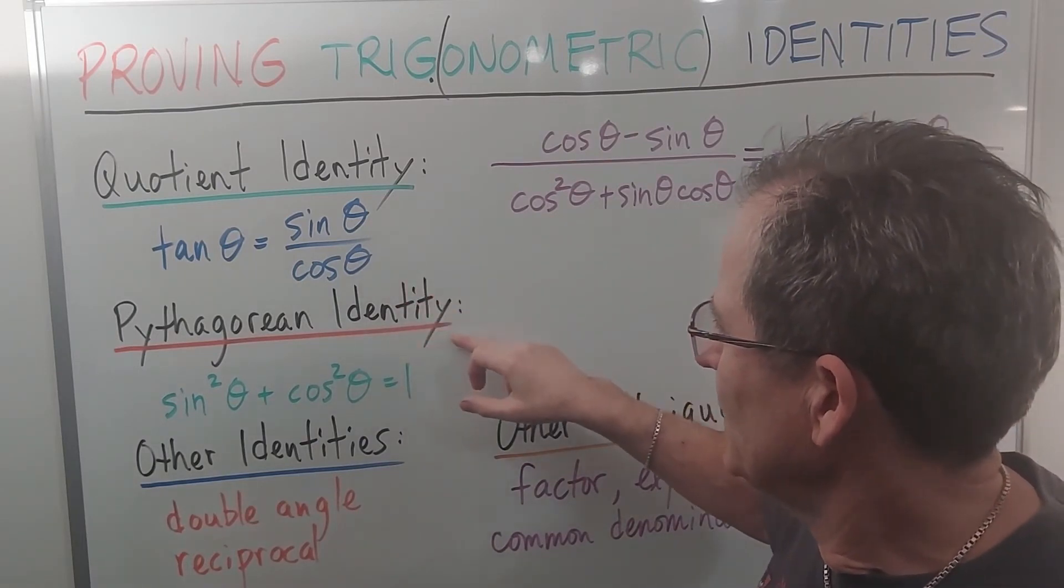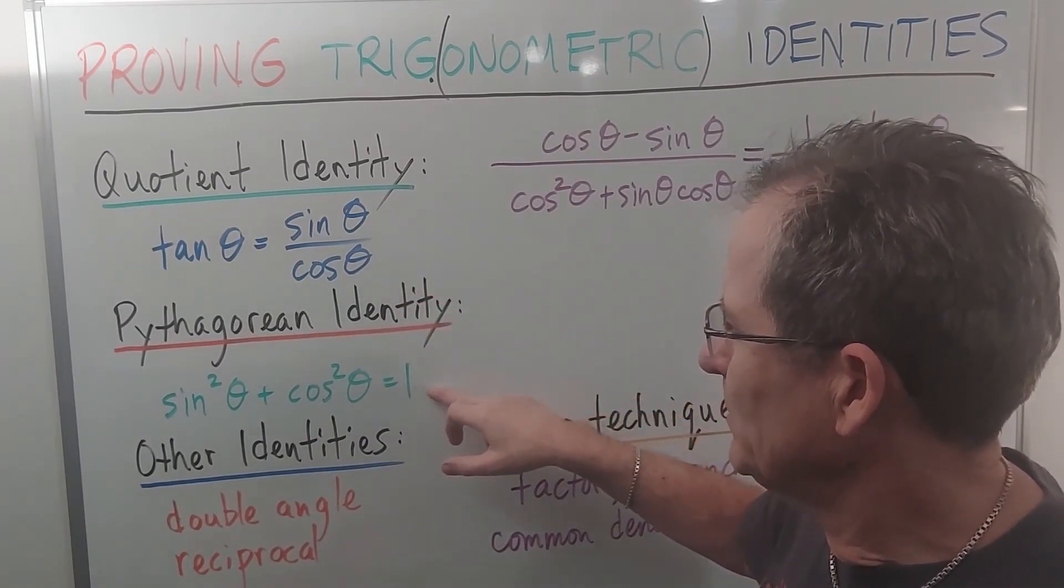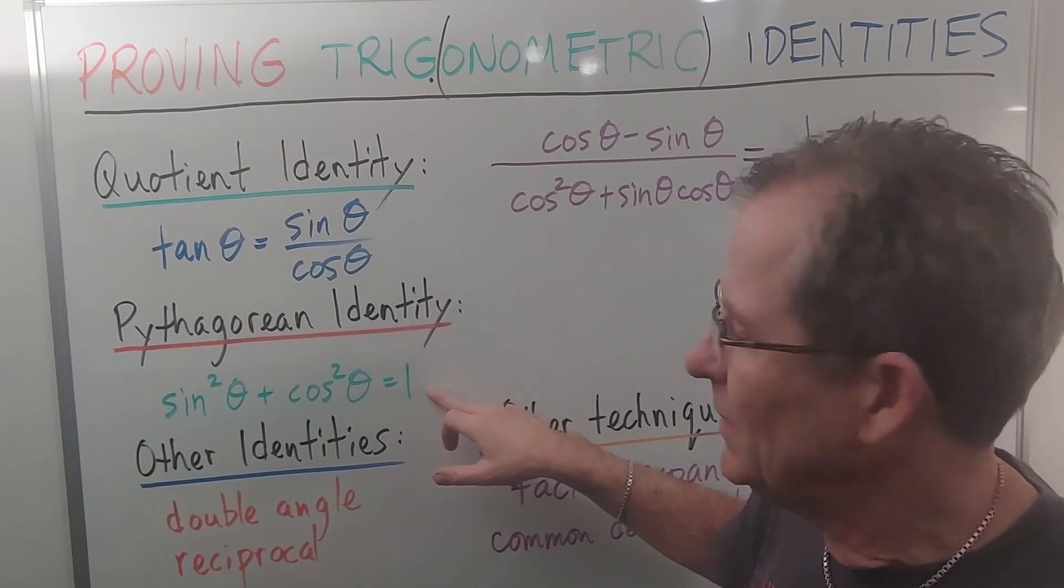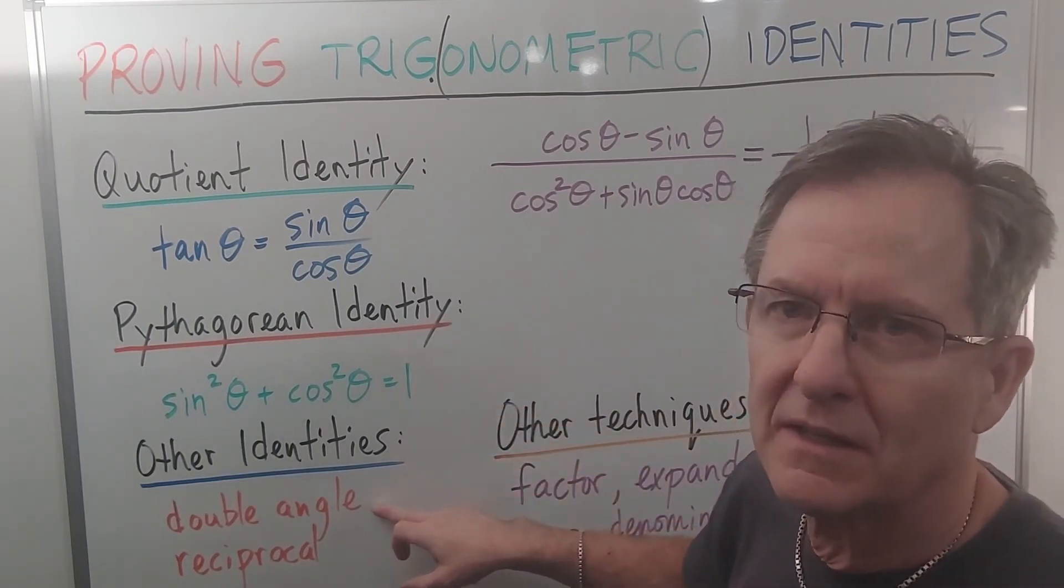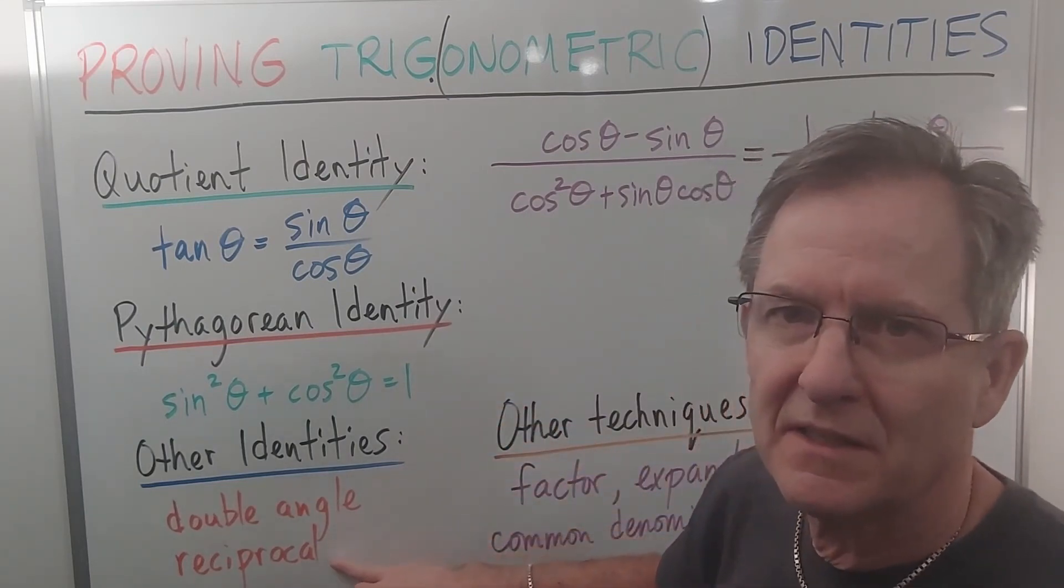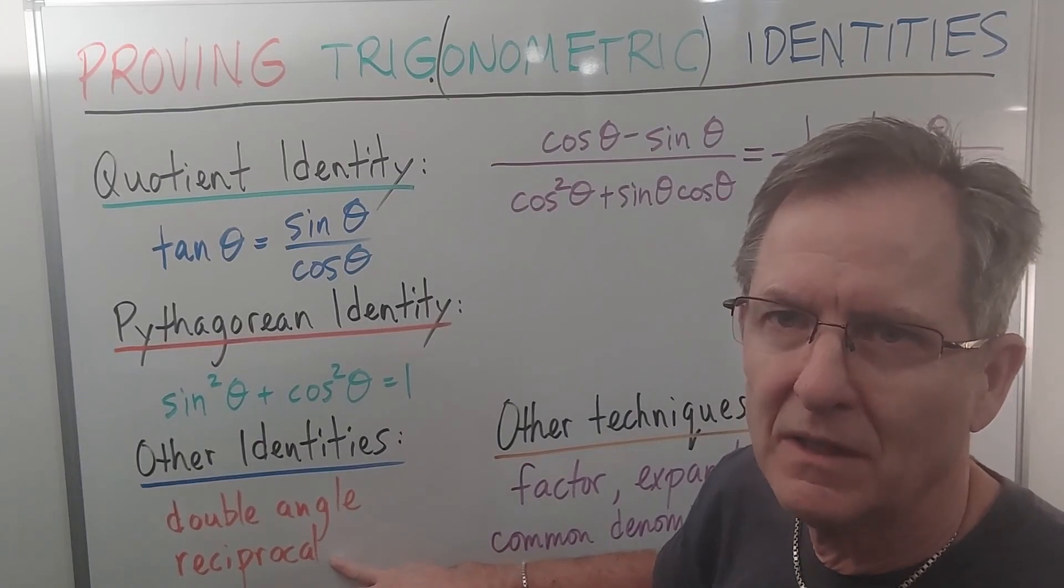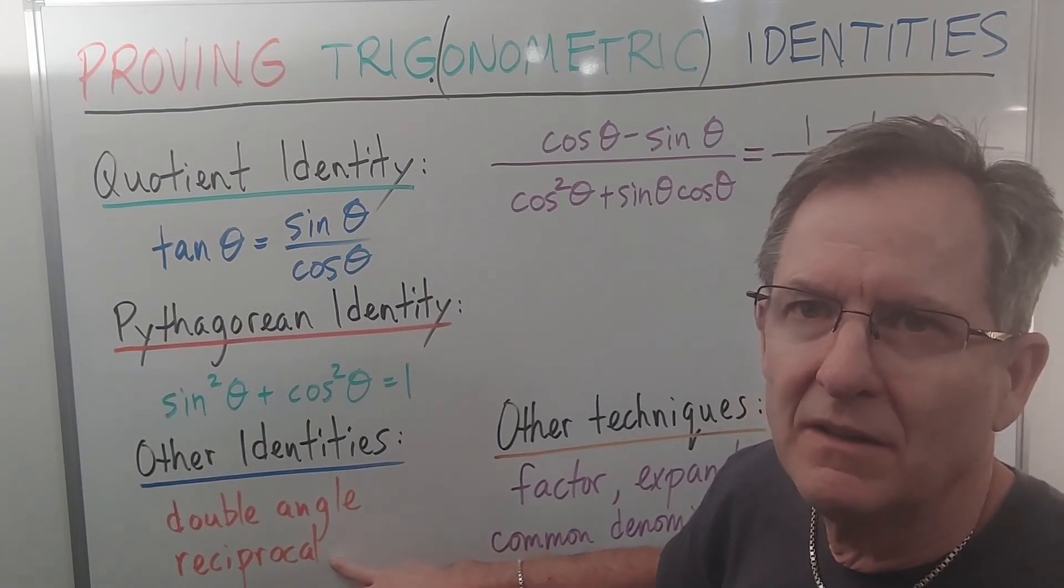The Pythagorean identity, which is sin²θ plus cos²θ equals 1, or other identities such as double angle identities, reciprocal identities, and even others, depending on how sophisticated the identity is.